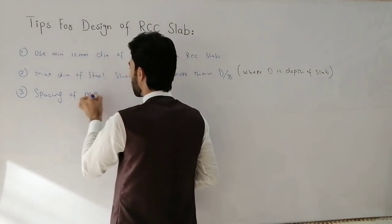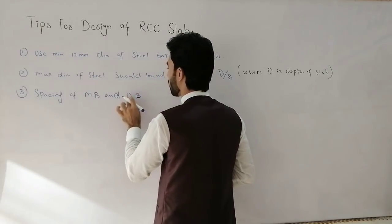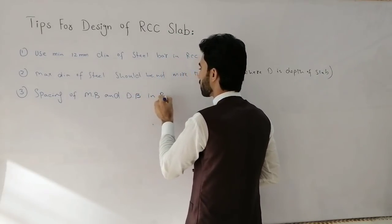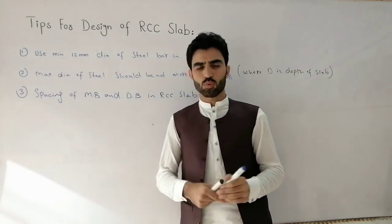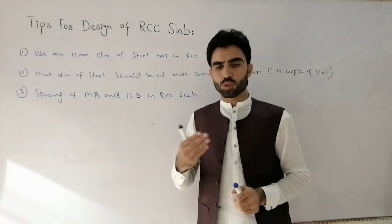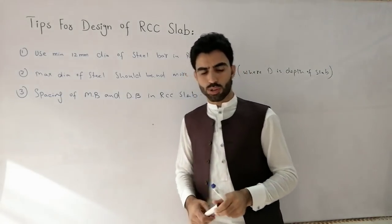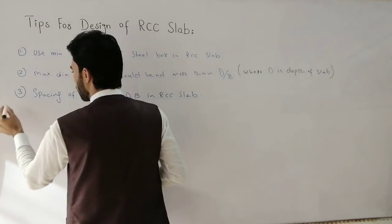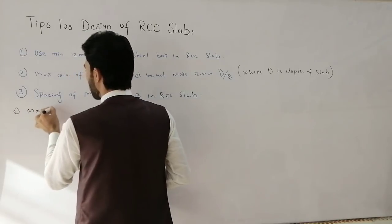Tip number three is spacing of main bars and distribution bars in RCC slab. Many students ask: what is the maximum spacing and minimum spacing between main bars and distribution bars? The first is maximum spacing for main bars.